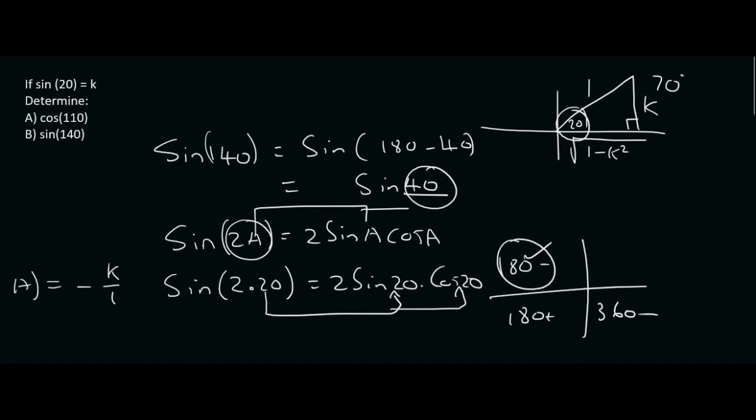So, the answer is going to be 2, which is that one, times the sin of 20. Well, the sin of 20 is just k, and the cos of 20, well, that we'll get from the diagram as the adjacent over the hypotenuse. So, that's just going to be the square root of 1 minus k squared. And you can't simplify this any further, so the final answer is 2k square root 1 minus k squared.